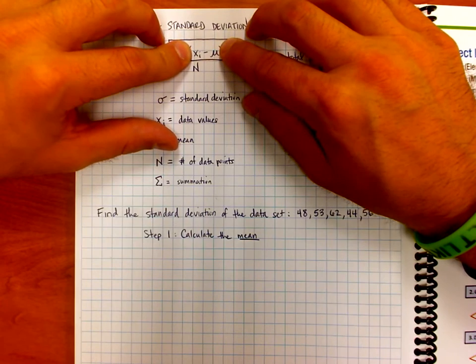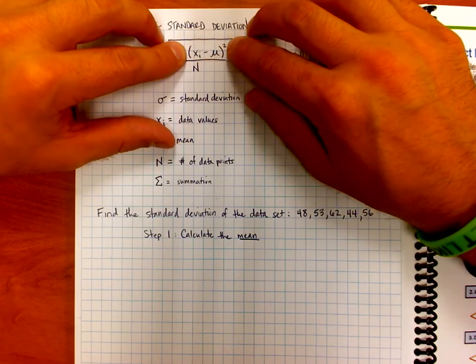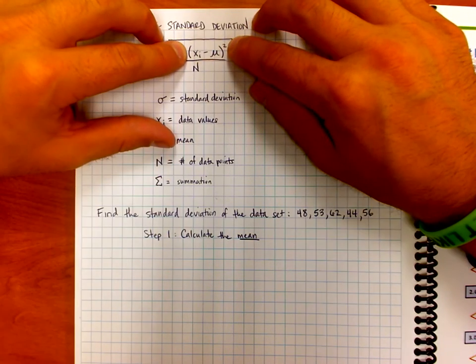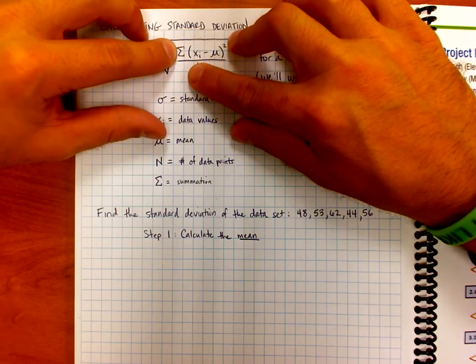And now if we have 10 data points, that means we're going to do this 10 different times. That's going to give us 10 results, 10 different values, each of which we're going to need to square. And once we have those 10 squared values, then we need to add them up, right? And that gives us the top of this fraction.